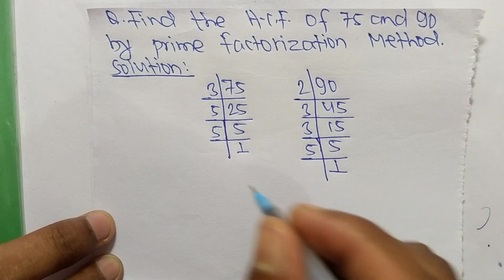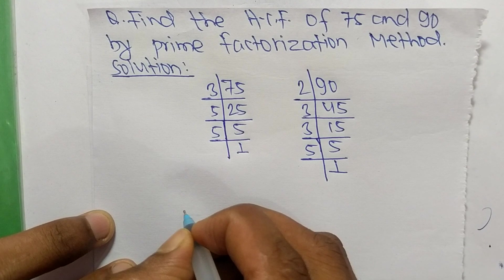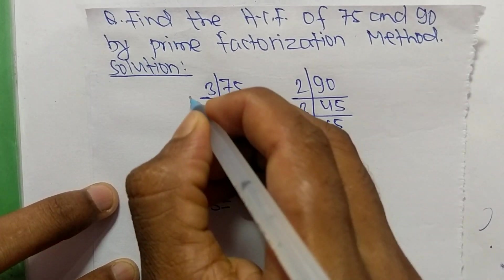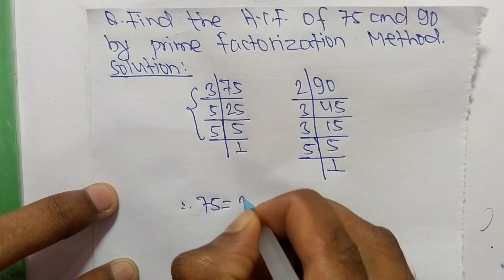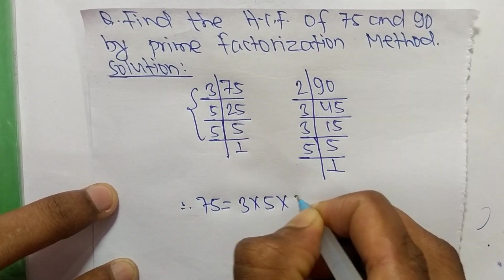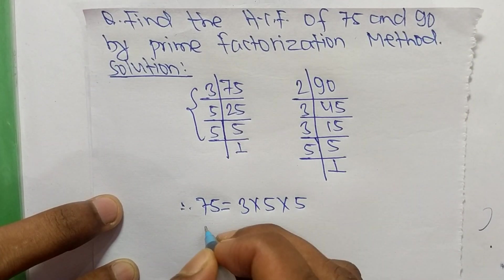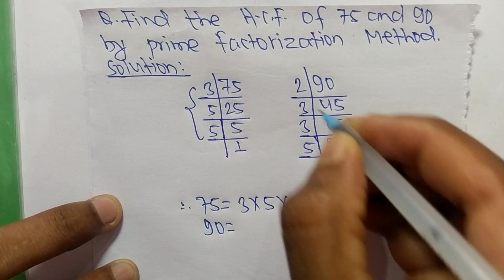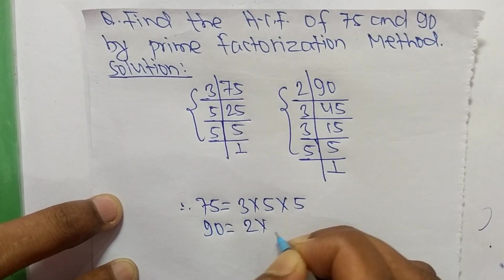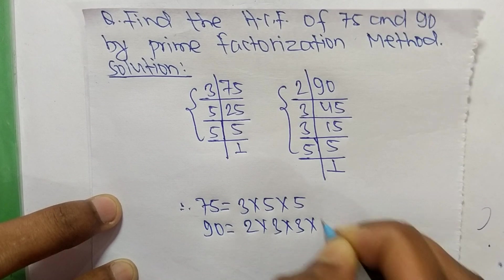So from these prime factors we can write 75 is equal to 3 times 5 times 5. Like this, 90 is equal to 2 times 3 times 3 times 5.